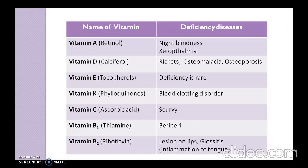Vitamin C, that is ascorbic acid, produces scurvy as its deficiency disease. Vitamin B1, known as thiamine, produces beriberi. There are two types of beriberi: wet beriberi, in which the heart and circulatory system get affected, and dry beriberi, in which the nervous system and muscles get affected.